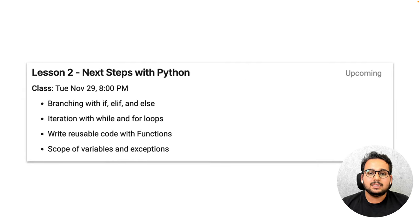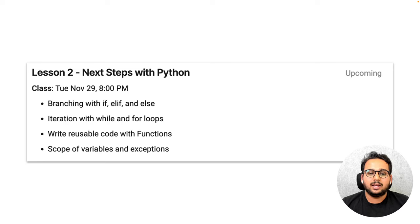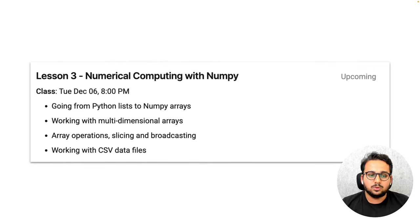Lesson two is Next Steps with Python — a continuation of the first lesson covering more advanced topics: branching with if, elif, and else; iterations with while loops and for loops; how to write reusable code using functions; and scope of variables and exceptions.